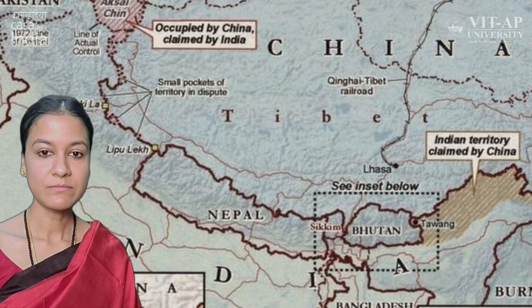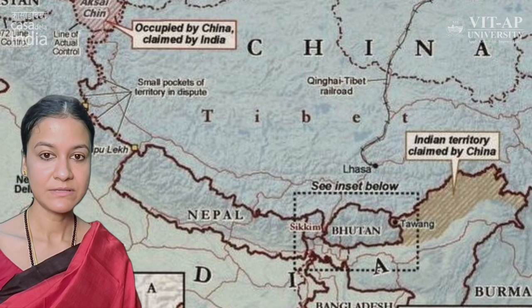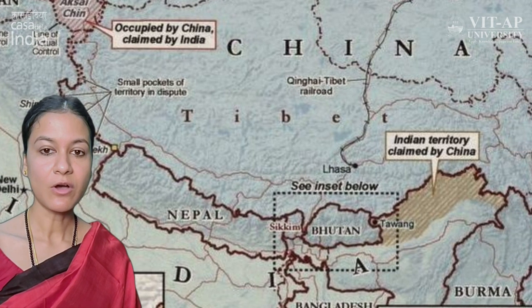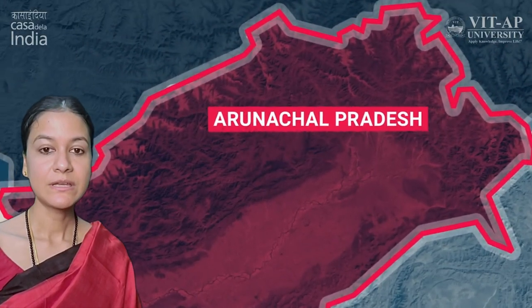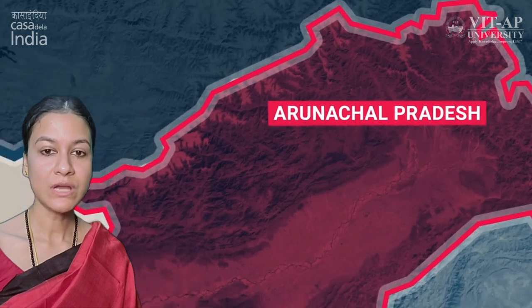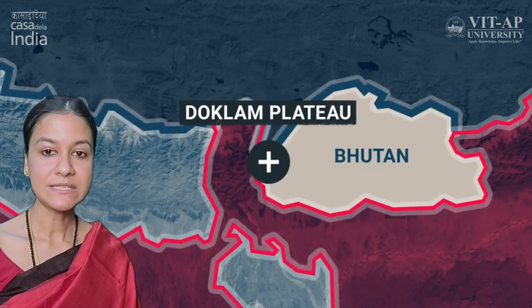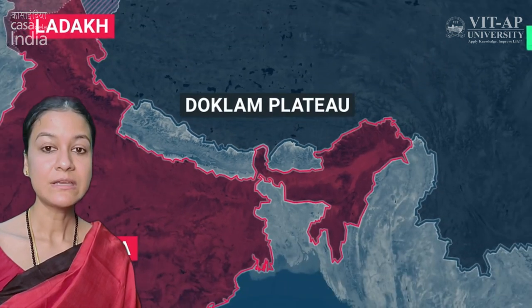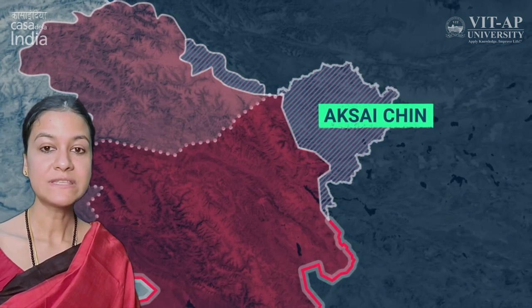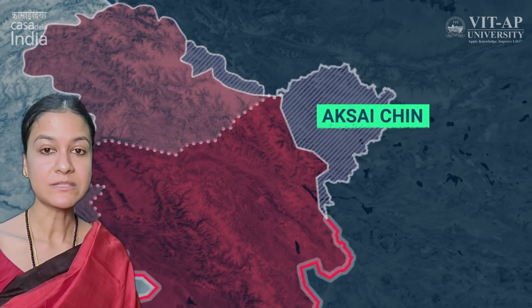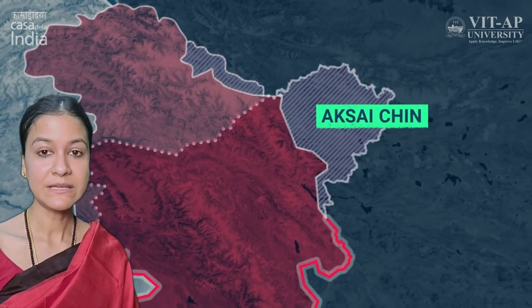The long-standing border issues between India and China stretch throughout different regions of the Himalayas. In the eastern sector, China claims large portions of the state of Arunachal Pradesh, which is now under Indian control. In the western sector, China claims Aksai Chin, which it believes is a part of its Ladakh region. The issue gained larger public attention in the recent past due to repeated India-China military standoffs. However, the origin of these disputes dates back to the colonial era.